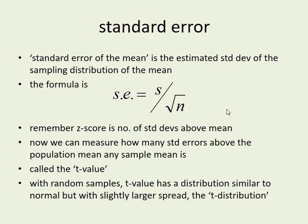Now, what we can do now is we can measure how many standard deviations above a possible population mean we are for any sample mean and that's called the t-value. Now that's easy to say but it's hard to understand until you've seen a whole load of examples, which we will.